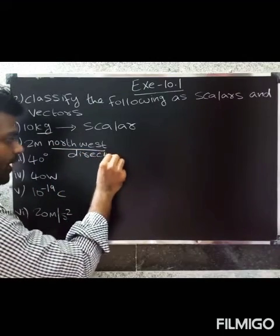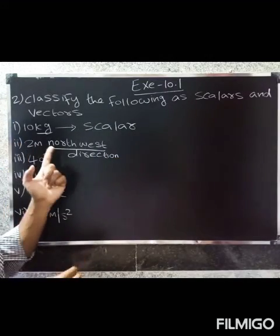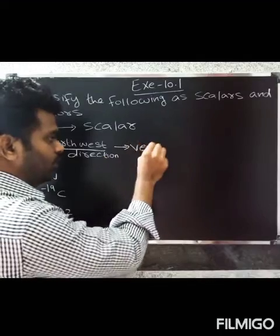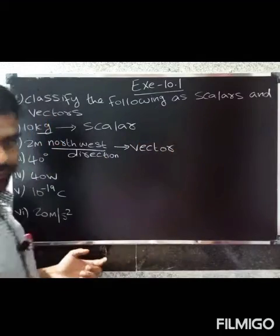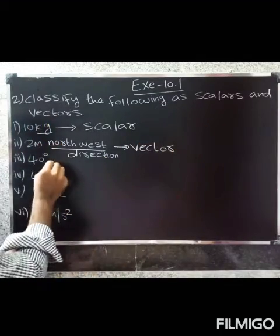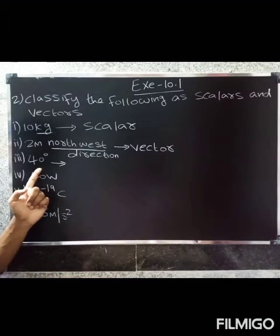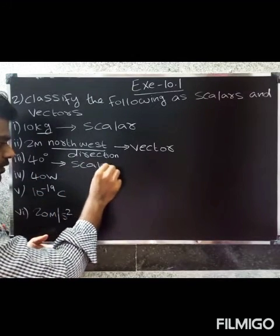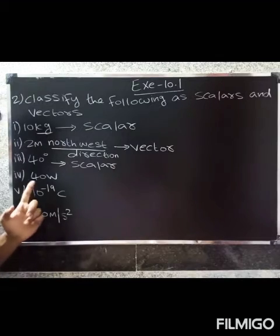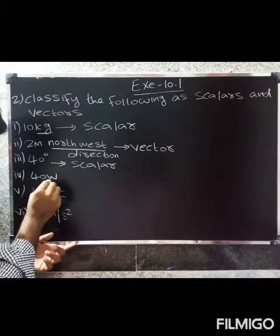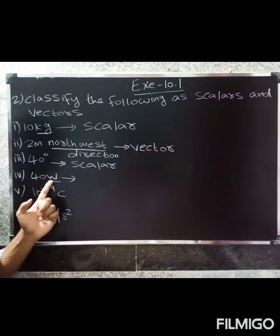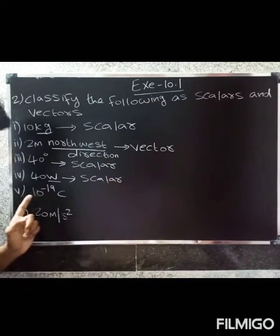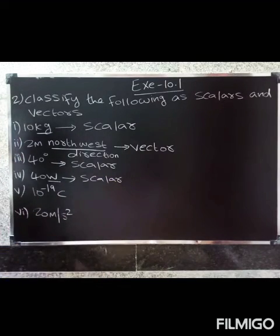2 m northwest includes both magnitude and direction, so it is a vector. Next, 40 degrees — only magnitude, so that is a scalar. 40 watts — only magnitude, so scalar as well. 10 to the power 19 coulombs — scalar.